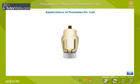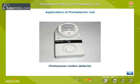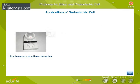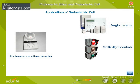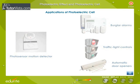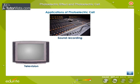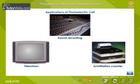The photoelectric cell, popularly known as the electric eye, is employed in photosensor motion detectors used in burglar alarms, traffic light controls, and automatic door openers. Various types of phototubes are used in sound recording, television, and in scintillation counters.